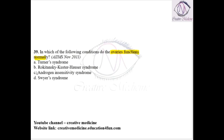Ovary functions normally in Rokitansky-Küster-Hauser syndrome. In Turner syndrome we have streak ovaries; in androgen insensitivity syndrome ovaries are completely absent; and in Swyer syndrome ovaries are not functioning properly.